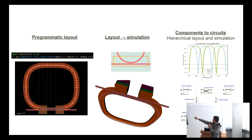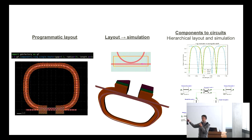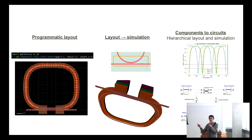Programmatic layout — all the p-cells are defined. You define your p-cells, parametric cells, in Python. There are functions, so it's very easy to change them. You can do all the functional programming tricks, separate them into different functions, and do functions for routing.